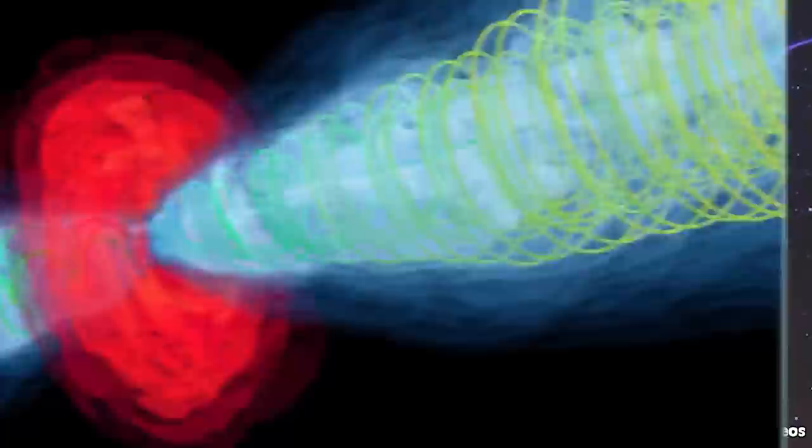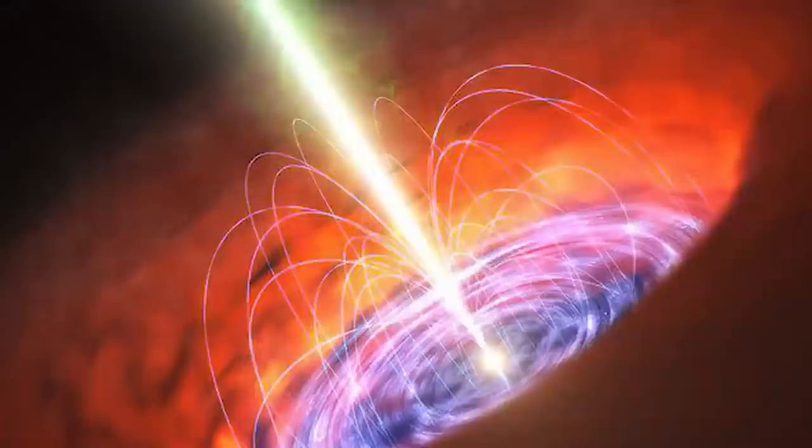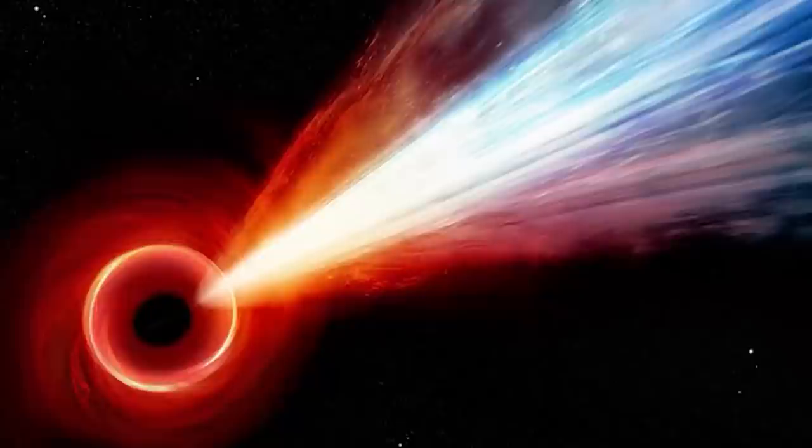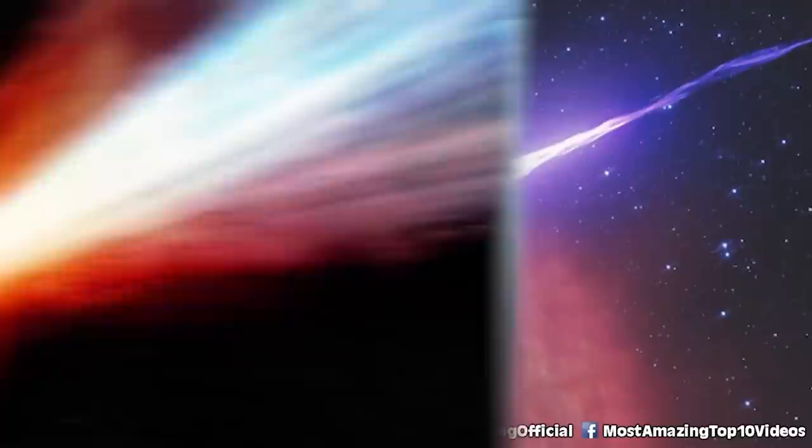But just how does something like this happen? Astronomers in New Mexico discovered that this massive jet is caused by a corkscrew-shaped magnetic field. Like a space undertow made out of gravity. According to the National Radio Astronomy Observatory, this is the longest magnetic field ever found in a galactic jet.